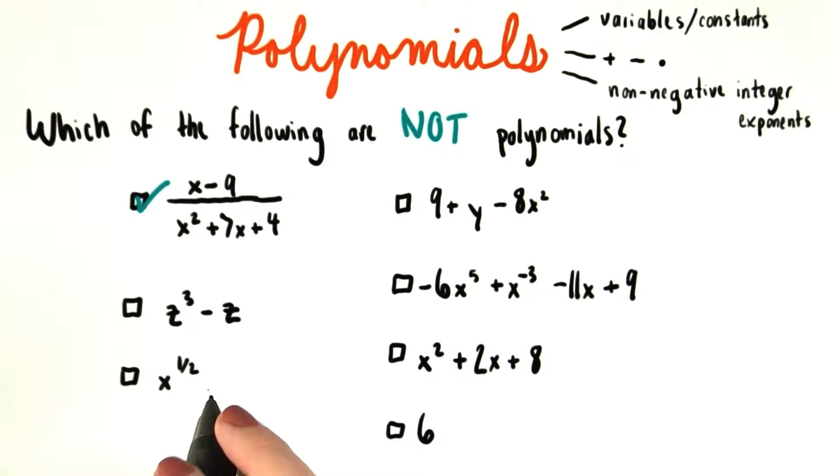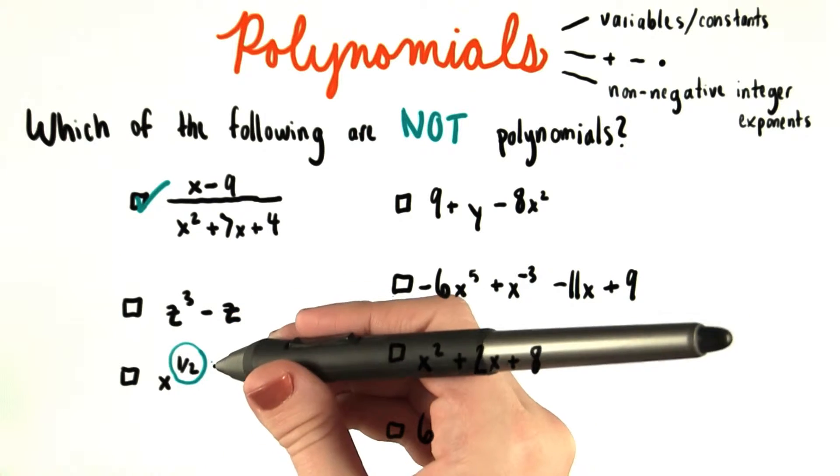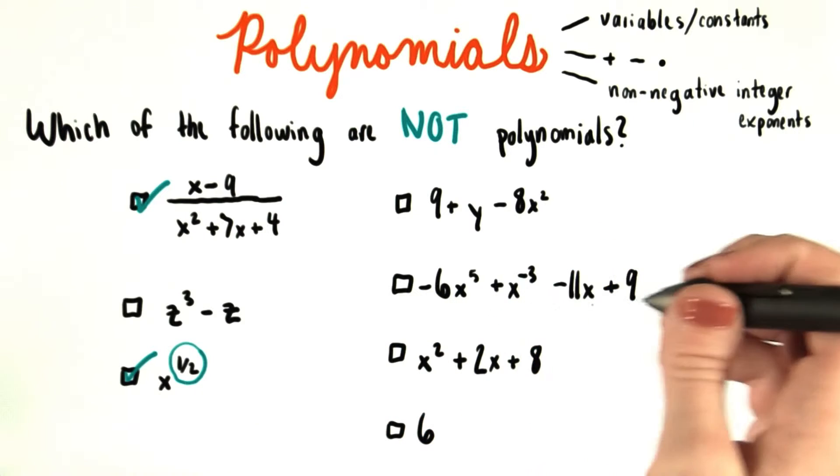Right here, we have x to the 1 half. And 1 half may be positive, but it's not an integer. So that means that this is not a polynomial.